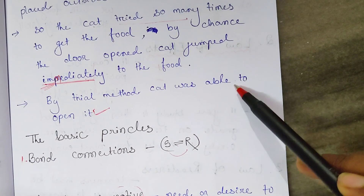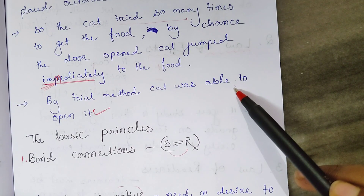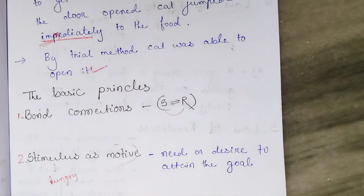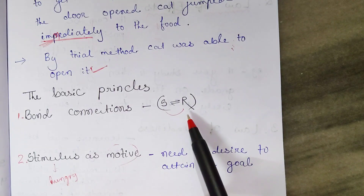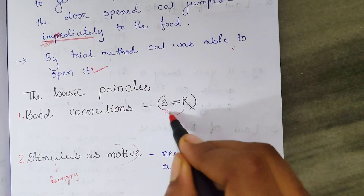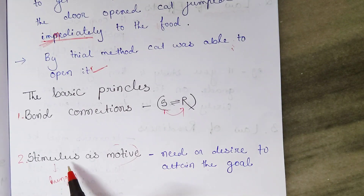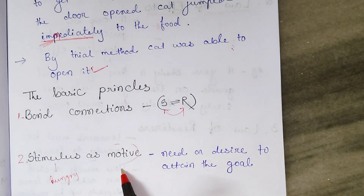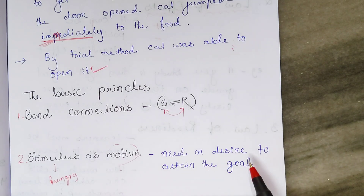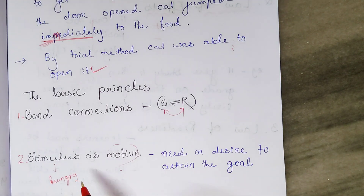This was Thorndike's puzzle box experiment. The basic principles of this theory: first is bond connection — for every stimulus there is a response. Second is stimulus as motive — stimulus motivates you to do something. For example, feeling hungry motivates you to eat food. Motivation is very important in learning; we need a motive or desire to attain the goal.